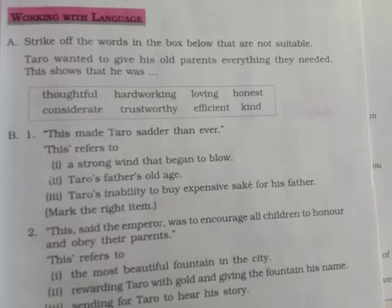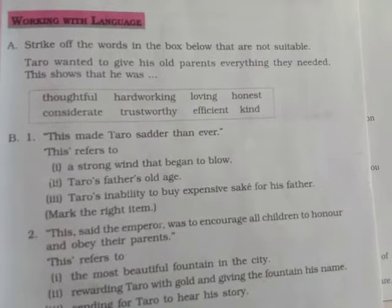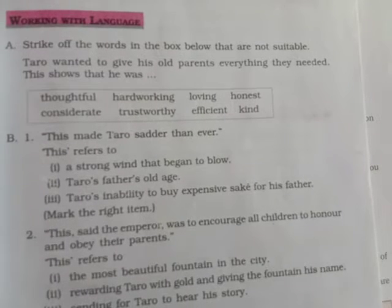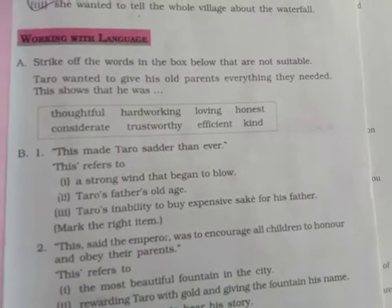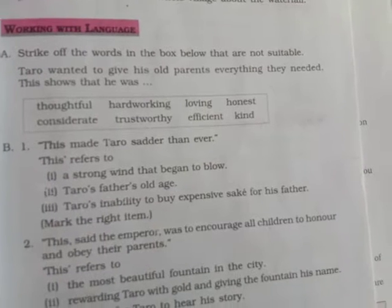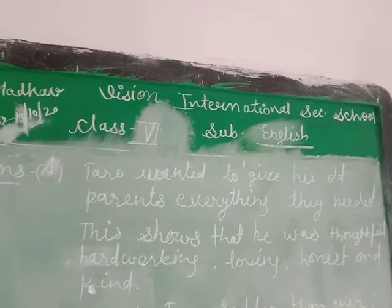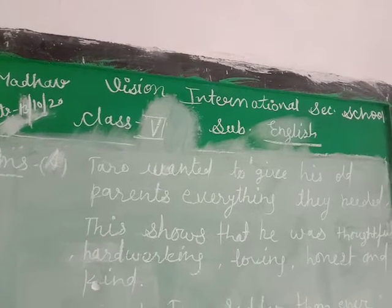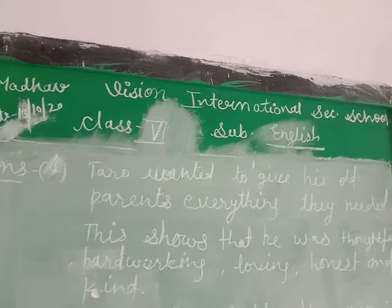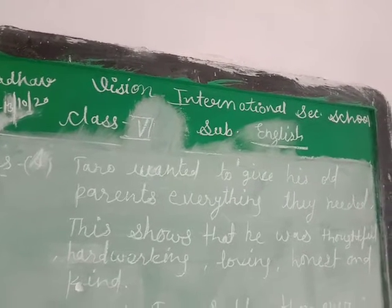When you complete the sentence with the subject, the student's answer is: 'Taro wanted to give his old parents everything they needed. This shows that he was thoughtful, hard-working, loving, honest, and kind.' The words 'concentrate,' 'trustworthy,' and 'efficient' are struck out as they are not suitable.